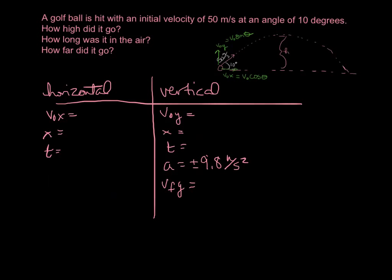Filling in our table, v-naught-x is our initial velocity — 50 — times the cosine of 10. We know that our angle is 10 degrees, so that's where the 10 came from. Remember, the acceleration was positive or negative 9.8. Since our initial velocity was in the up direction and acceleration works in the down direction, this time we're going to use negative 9.8. The x in the y-direction represents our height.